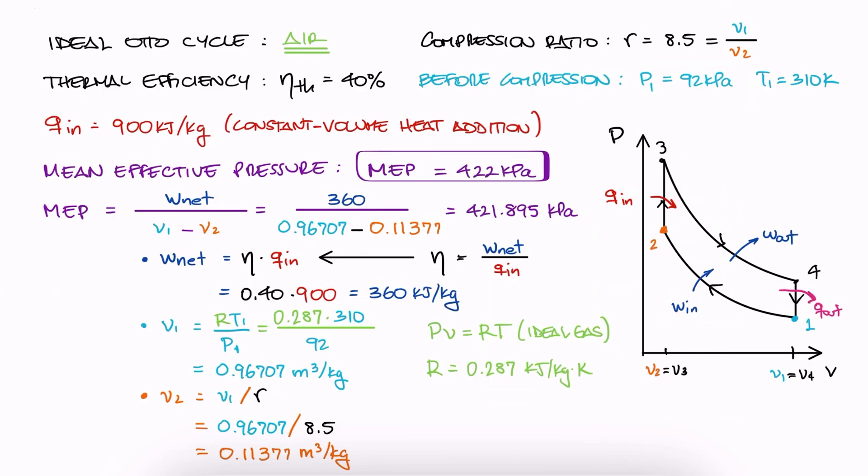Since the cycle fluctuates between a low and a high volume, and it's not four distinct volumes, one at each stage, this MEP is effectively the average pressure that would result in a boundary work equal to the net work out.